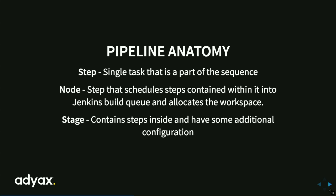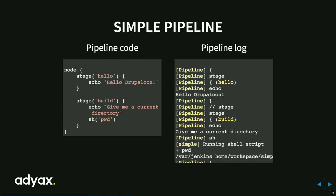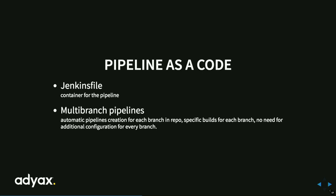The anatomy of pipelines: you have a step, which is a single task in a sequence; a node, which contains multiple steps; and a stage, which is where you define your steps. Here's an example: this is the pipeline code in the DSL — you have a stage called 'hello', a stage called 'build', and you can launch commands like 'echo hello drupal.com'. The pipeline can be stored in a Jenkinsfile, meaning you can version it. No need to point and click in Jenkins to create multiple jobs — it's already described in the Jenkinsfile. You can also create a multi-branch pipeline for different environments.